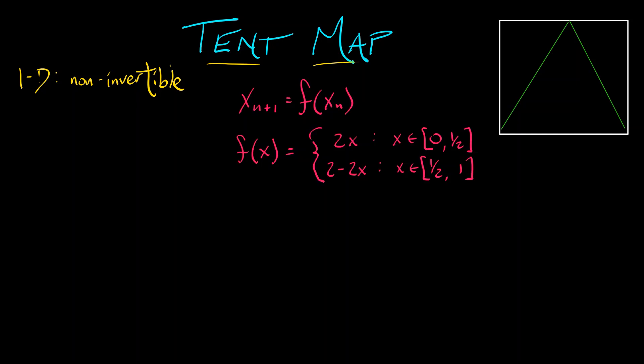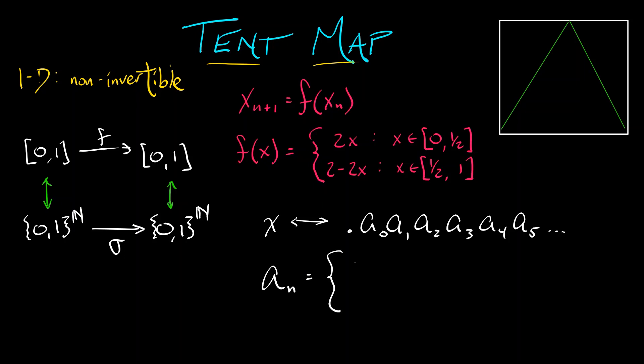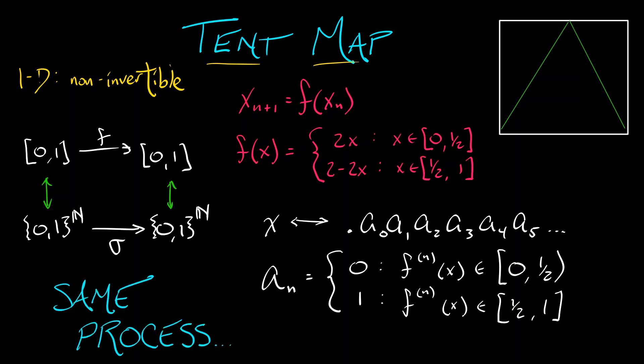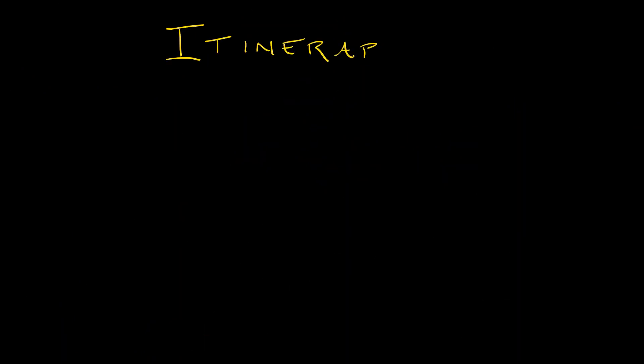What's cool about the tent map is it also has a full symbolic dynamics where I can take that map of the interval, I can take the shift map on the space of symbol sequences with digits 0 and 1, and I can build a perfect correspondence, a topological conjugacy, where to every point x in the interval, I assign a symbol sequence a_0, a_1, a_2, a_3, a_4, a_5, keep going, where the nth digit a_n is either a 0 or a 1. It's a 0 if the nth iterate of x lies in the interval from 0 to 1/2. It's a 1 if the nth iterate of x lies in the interval from 1/2 to 1. It's the same process, but without any of that binary decimal expansion stuff. What matters is how you build these itineraries, these symbol sequences, how we get the correspondence from x to these digits.